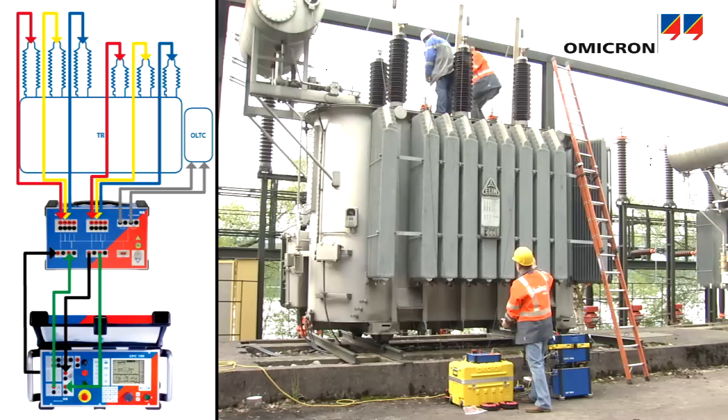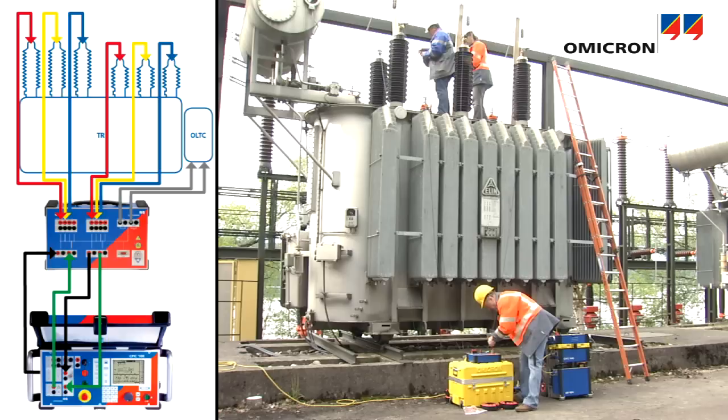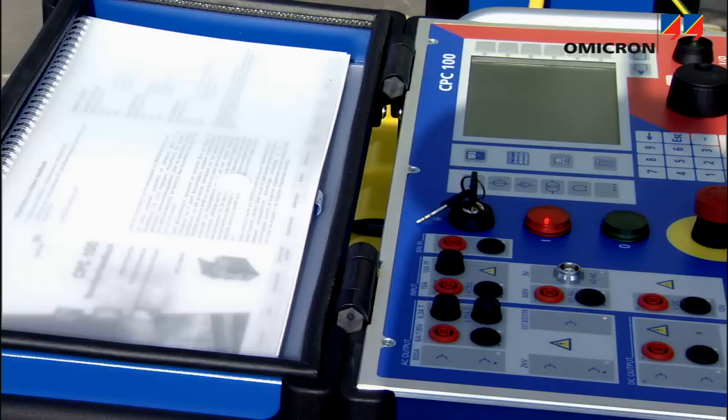With the same cabling, both ratio and resistance measurements are performed one after another automatically, making measurements faster and safer.